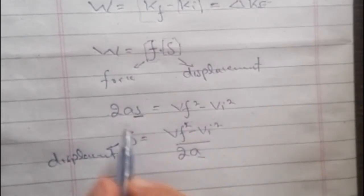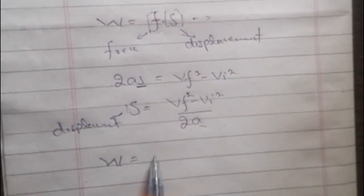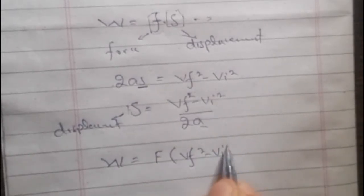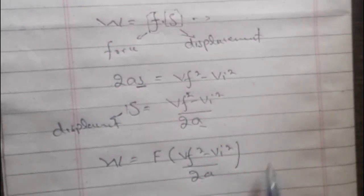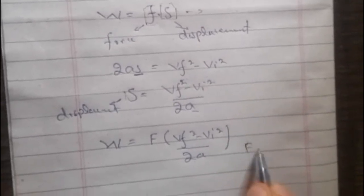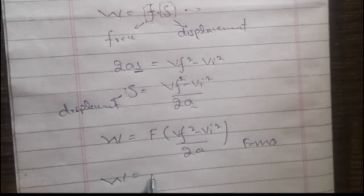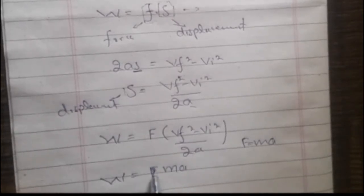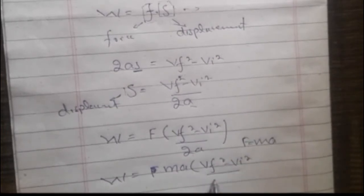From this equation, we substitute the value of s into W = F·s, and we get W = F × (vf² - vi²) / 2a. We know that force F is equal to ma, so putting the value of F we get W = ma × (vf² - vi²) / 2a.